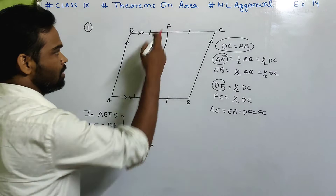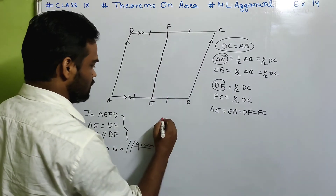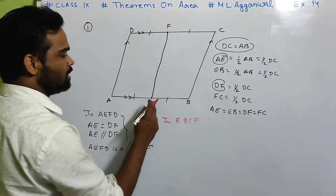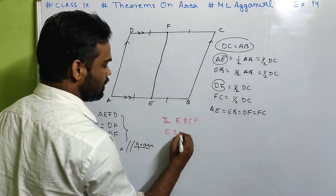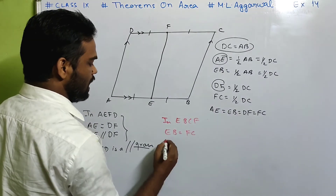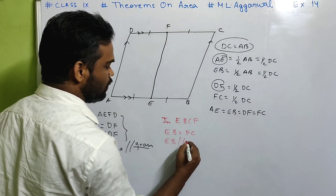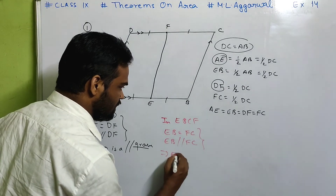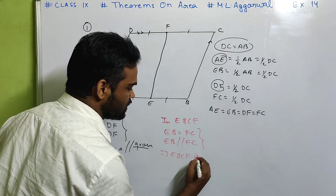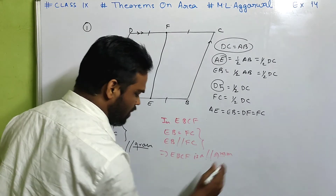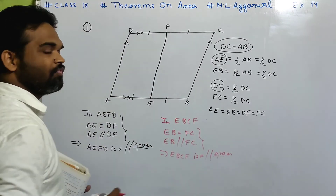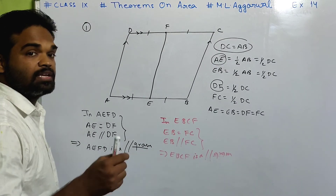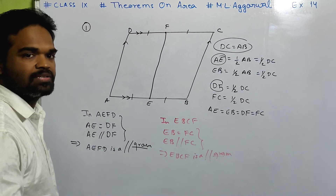Similarly in EBCF, EB is equal to FC and EB is parallel to FC. By these two points we can say that EBCF is also a parallelogram. So we have just proved that both figures are parallelograms. Now we need to prove they are equal parallelograms, meaning the area is also the same.